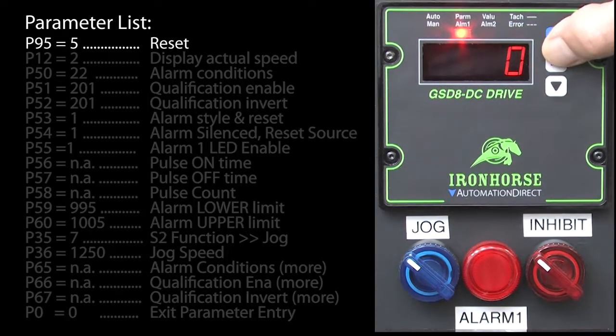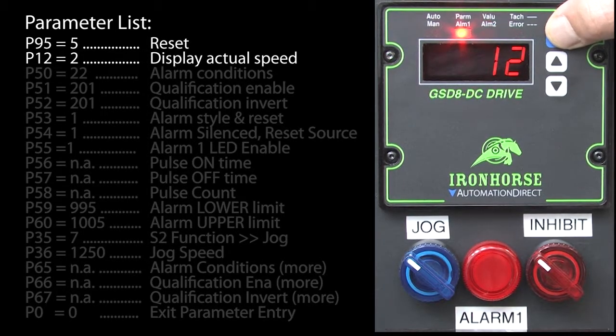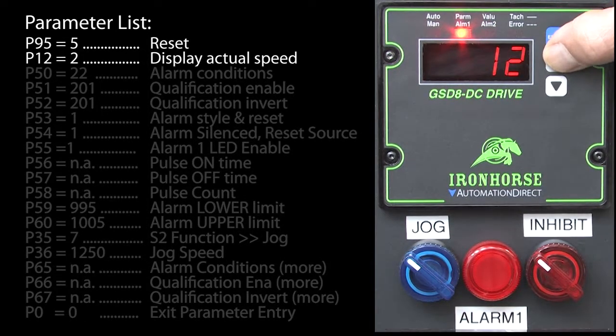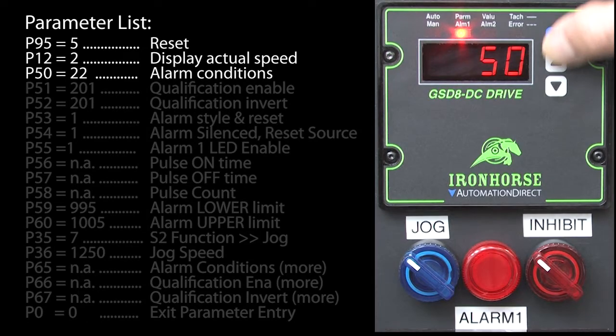And before we do alarm stuff, let's go to parameter 12 and change the display to show us the actual speed so we can see when the drive is ramping up or down. OK, we need to go to parameter 50 to select what we want alarm 1 to go active on.